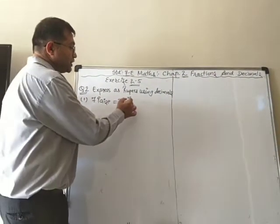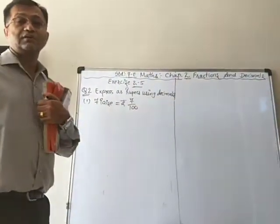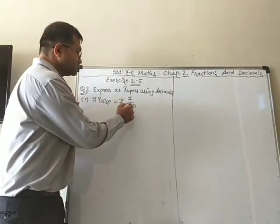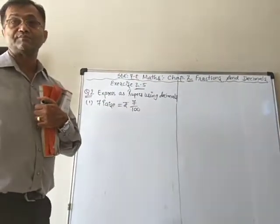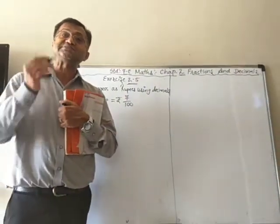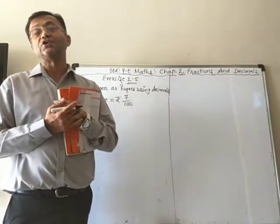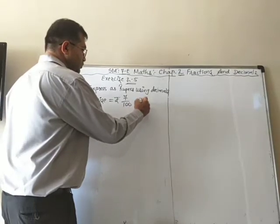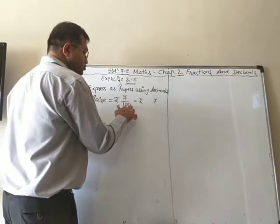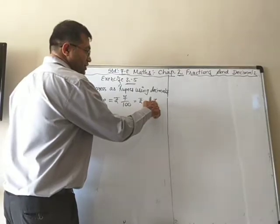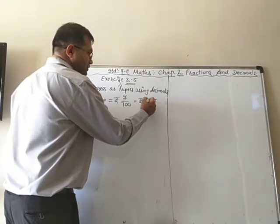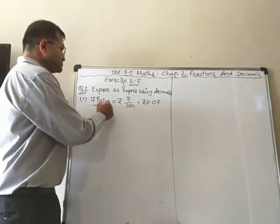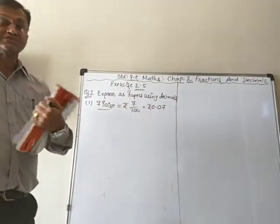To convert into decimal form, check how many zeros are there with 1 in the denominator — that many decimal places must be in the numerator. Here there are two zeros, so we need two decimal places but 7 has only one digit. So we put another zero: 0.07. Therefore 7 paise equals rupees 0.07.